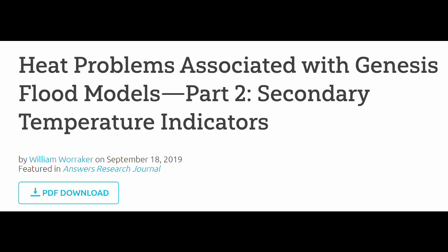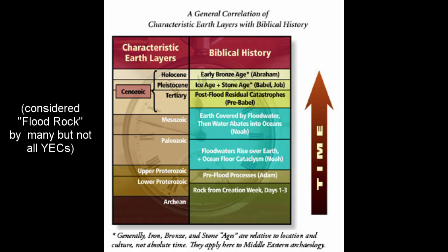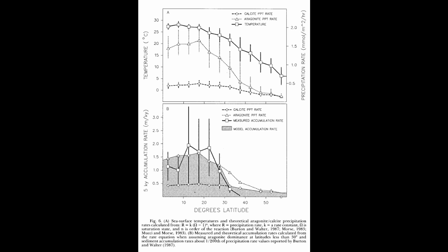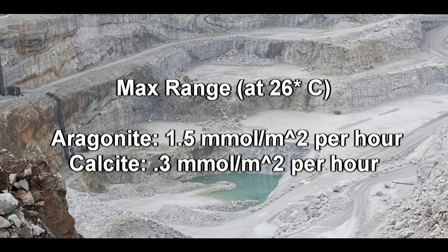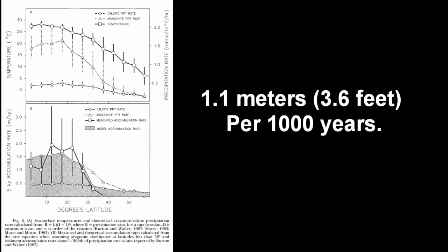We do not see any signs of the seas being at supercritical temperatures. This use of geochemistry to find clues of ancient paleo-environments is even accepted by many creationists, such as Warrecker at Answers in Genesis. Opdyke and Wilkinson examine the Cretaceous — which is broadly considered to be flood rock — in the chart you can see on your screen now. The temperature specifics for aragonite and calcite show a much greater range of precipitation for aragonite than for calcite, with aragonite precipitating much faster in warm water. The maximum rate was 1.5 millimoles per square meter per hour for aragonite and 0.3 millimoles per square meter per hour for calcite at around 27°C, with a minimum of 0.1 millimoles per square meter per hour for both at 8°C.